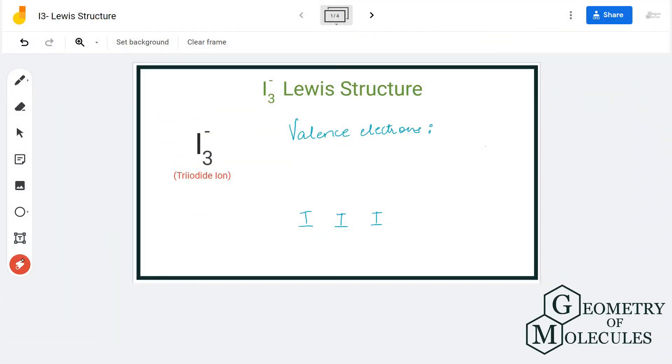Hi guys, today in this video we are going to look at the Lewis structure for tri-iodide ion. It has a chemical formula of I3 minus. The minus charge represents a negative charge this ion has because of